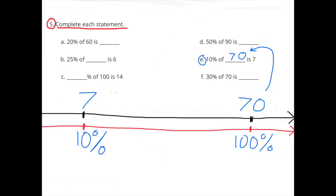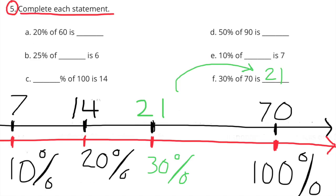E: 10% of what number is 7? I know 10% is 7. Multiply 10% times 10 to get 100%, so I multiply 7 times 10 to get 70. 10% of 70 is 7. F: 30% of 70 is what number? 100% of 70 is 70, and 10% of 70 is 7. I multiply 10% times 3 to get 30%, and multiply 7 times 3 to get 21. 30% of 70 is 21.